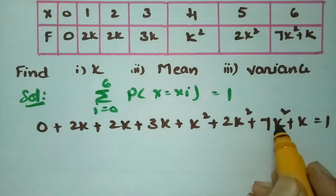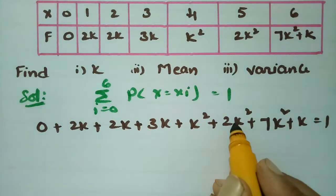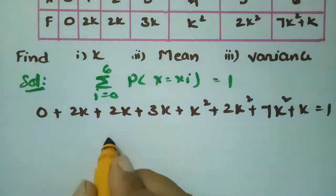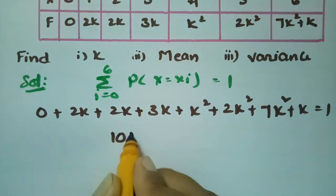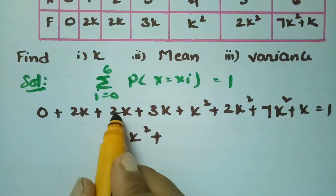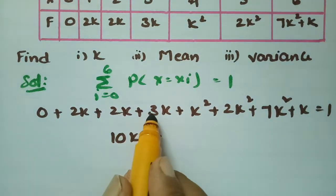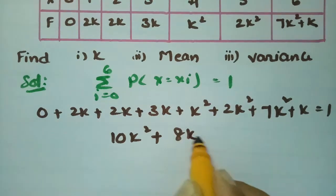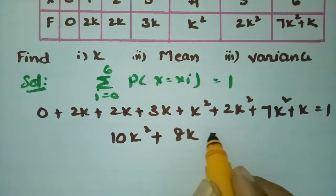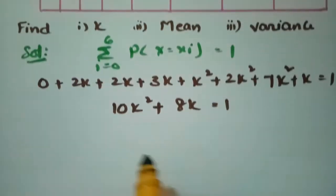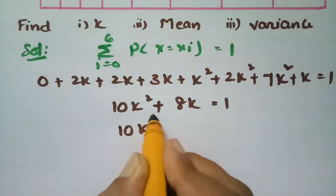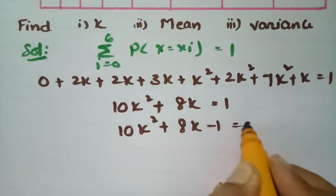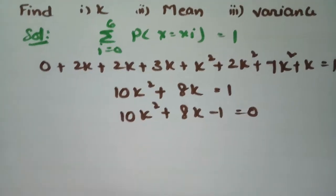Adding the k terms: 2k + 2k + 3k + k gives 8k. Adding the k² terms: k² + 2k² + 7k² gives 10k². So the equation simplifies to 10k² + 8k - 1 = 0.